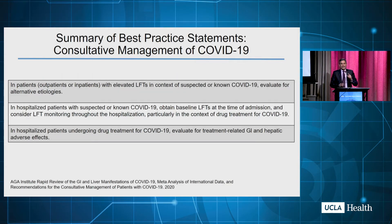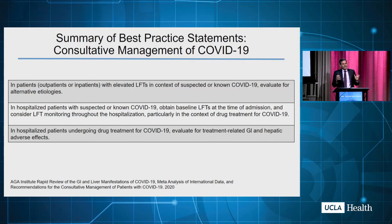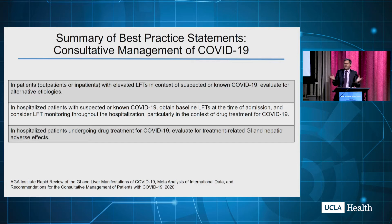The AGA had this summary of best practices. They say that in patients with elevated liver tests who have COVID, think about other things — think about common things: hepatitis B and C, medications, fatty liver, et cetera. Don't just chalk up all the patient's liver tests to COVID. We have a wide differential.